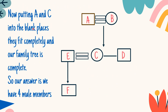Putting A and C into the blank spaces, they fit completely and the family tree is complete. A is the father of C, who is the daughter. A is married to B, and C is married to E and is the sister of D. The entire family tree is complete. Now we count the male members: 1, 2, 3, and 4. Our answer is there are 4 male members in the family.